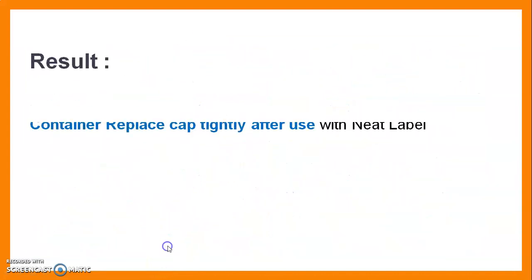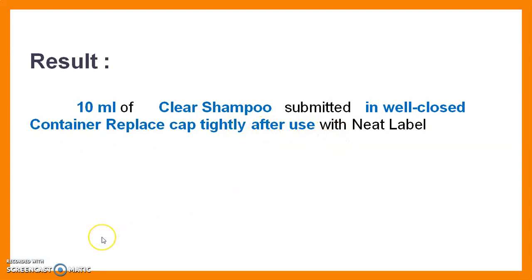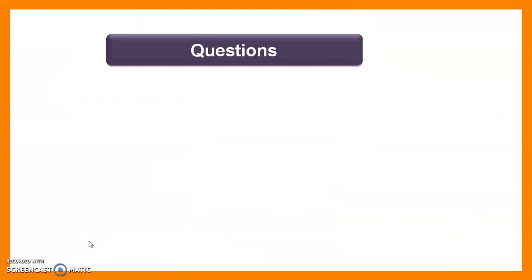Result: Today we prepared 10 ml of clear shampoo. 10 ml of clear shampoo was submitted in a well-closed container with the cap replaced tightly after use, with a neat label. In this way we finish experiment number 29.